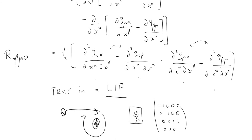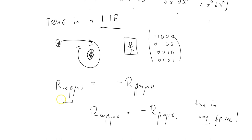I established that the tensor itself was—sorry, that the expression itself in a local inertial frame was anti-symmetric in alpha and beta.